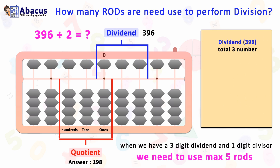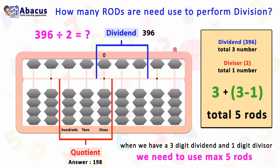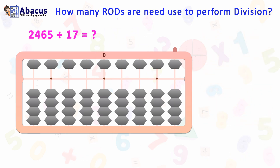In the dividend there are three digits and in the divisor there is one digit. The trick is: dividend total digits plus dividend total digits minus divisor total digits. So 3 plus 3 minus 1 equals 5. So here we only need to use a maximum of five rods to perform this division.